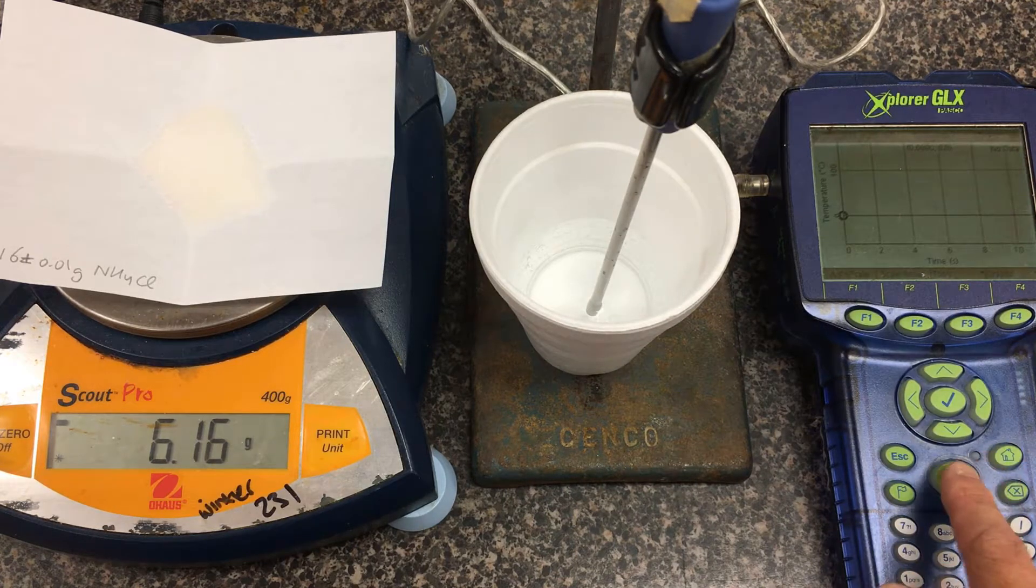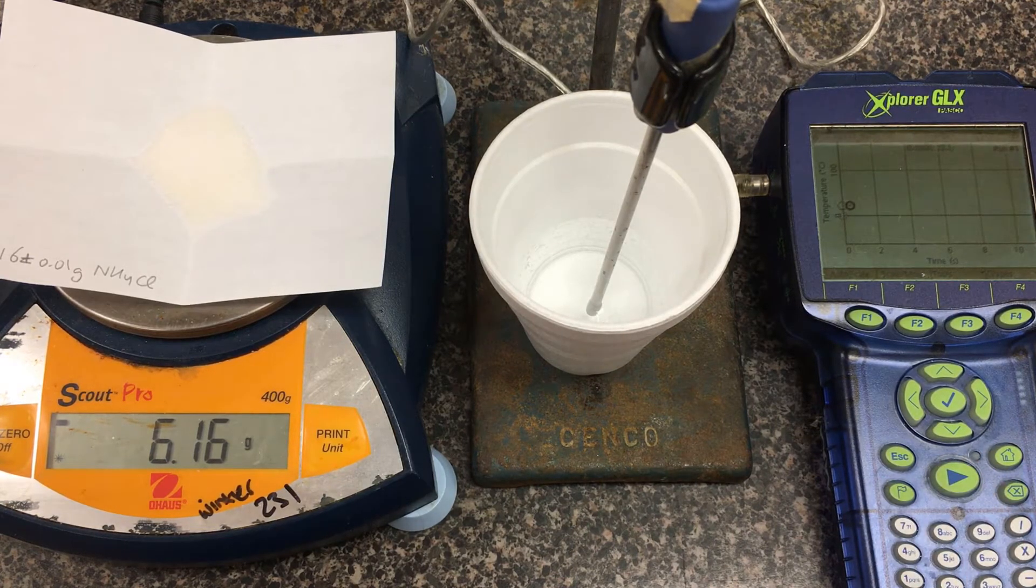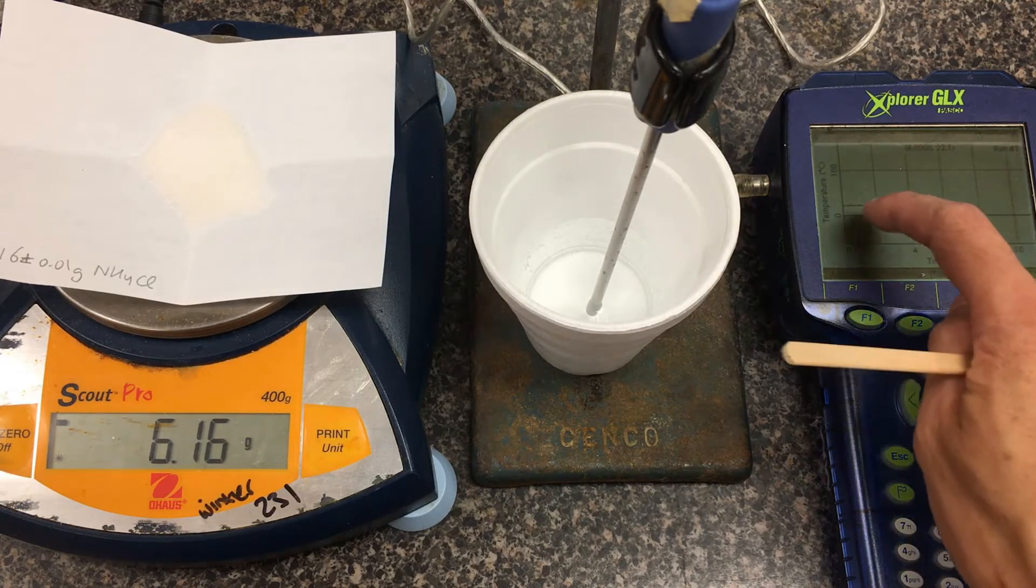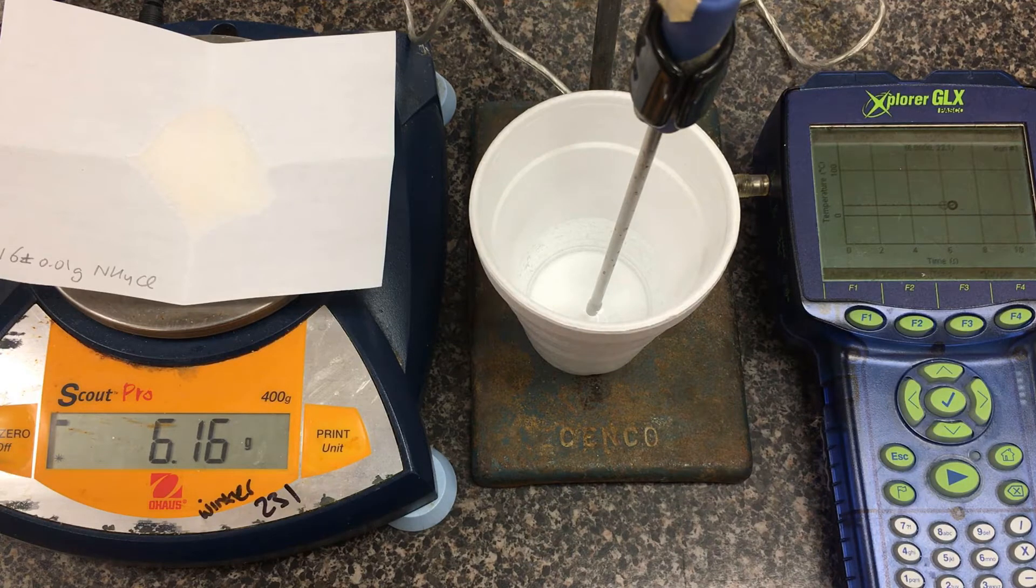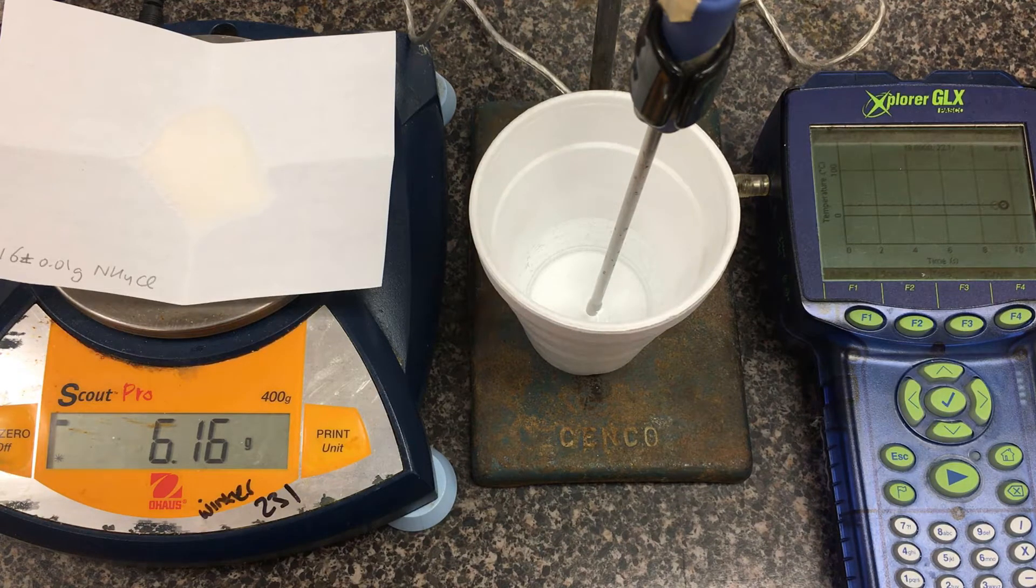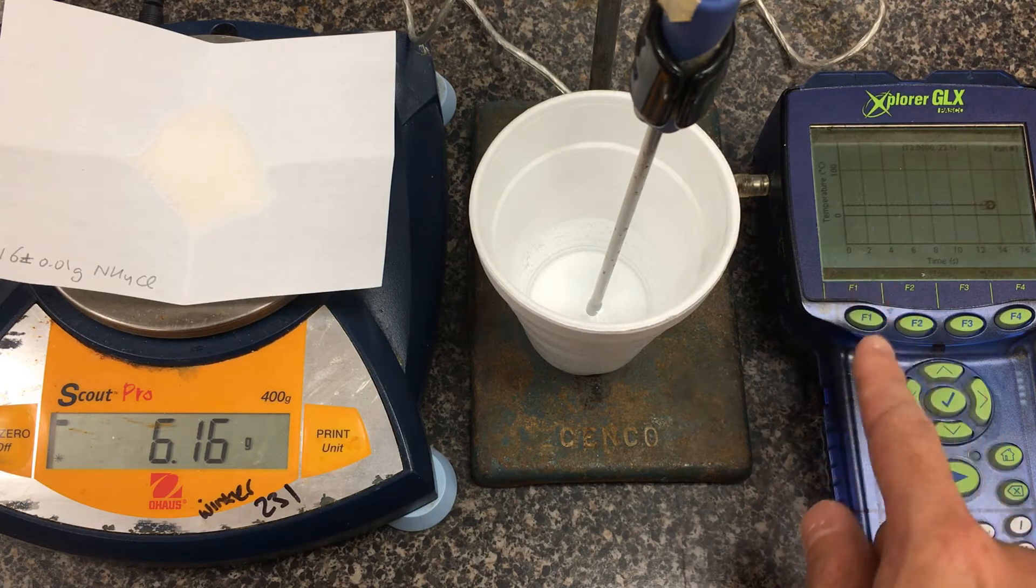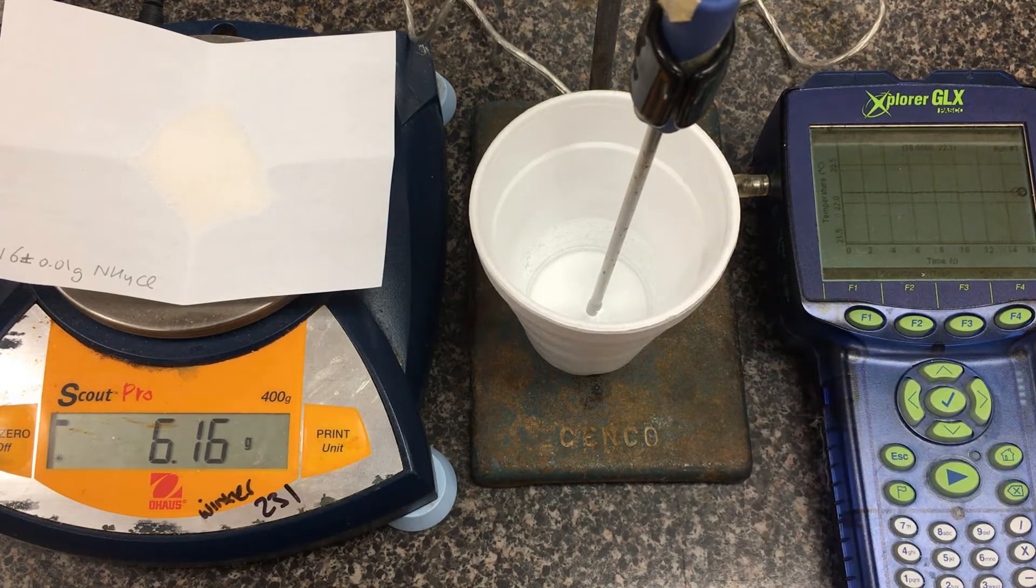To begin, we're going to press play to start a run. It's already starting to sample the temperature. If you can see the scale there, we're roughly about 20 degrees. I want to give it a baseline so we can get a starting temperature reading. It might be nice to press F1 to auto-scale it to zoom in a little bit.